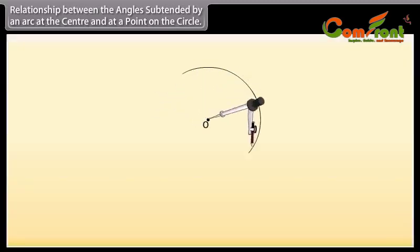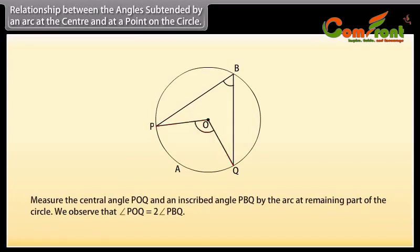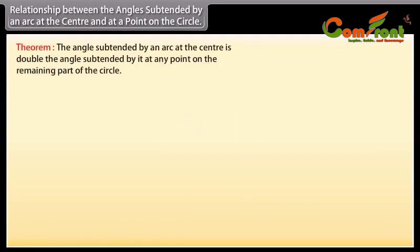Relationship between the angles subtended by an arc at the center and at a point on the circle. Draw a circle with center O. Let PAQ be an arc and B be any point on the circle. If we measure the central angle POQ and the inscribed angle PBQ at the remaining part of the circle, we observe that angle POQ equals 2 times angle PBQ. This gives us the theorem: the angle subtended by an arc at the center is double the angle subtended by it at any point on the remaining part of the circle.